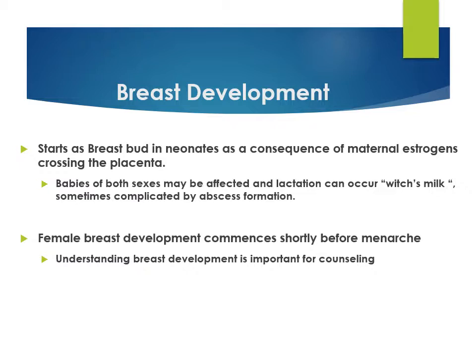Regarding breast development, there are slides in the handouts covering development at birth, puberty, and beyond. To summarize: breast development starts as a breast bud in neonates, sometimes due to maternal oestrogens crossing the placenta. Both male and female babies are affected, and sometimes babies can produce milk at birth — this is called witch's milk. The normal female breast development starts just before menarche, and it is important that clinicians understand this to allay anxiety in young patients who are developing their breasts.